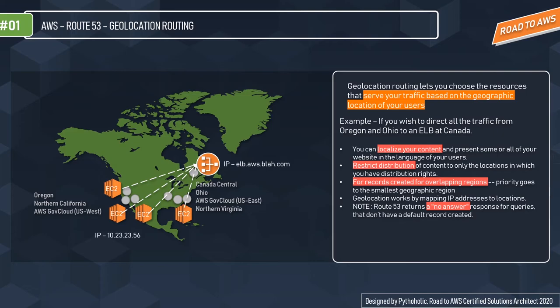The advantages of geolocation routing include: you can localize your content and present your website in the language of your users, restrict certain resources to specific countries (such as offering Hindi or English based on routing policy for India), and redirect content to only locations where you have distribution rights. For records created for overlapping regions, priority goes to the smallest geographical location. Geolocation works by mapping IP addresses to locations.